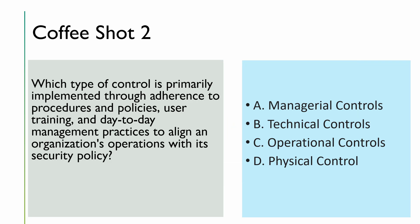Next coffee shot: which type of control is primarily implemented through adherence to procedures and policy, user training, and day-to-day management practices aligned with the organization's security policy? There are many hints — it mentions day-to-day operations, user training, and adherence to procedures — and we are introducing these day-to-day operations to align with the security policy, which is part of managerial control.